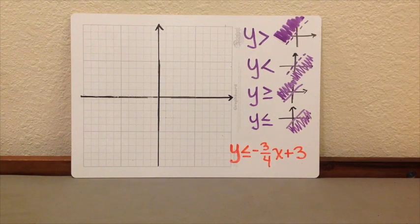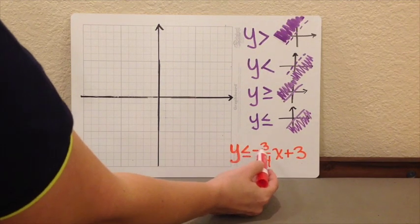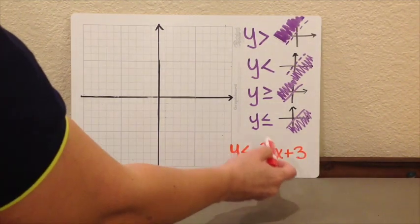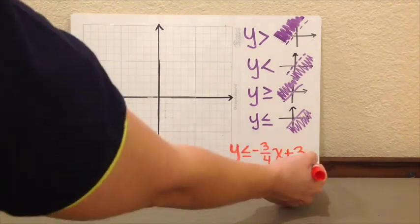So, after we do that, I have this example right here. y is less or equal than negative 3 over 4x plus 3. So again, what is my slope? Negative 3 over 4. What is my starting point? 3. So I am going to start at my starting point 3.